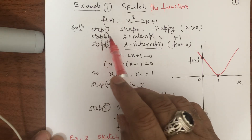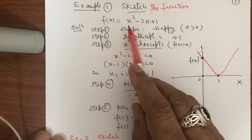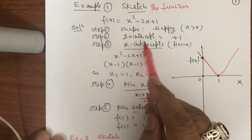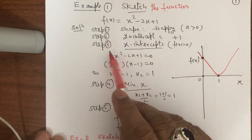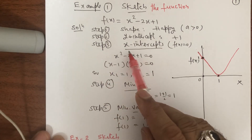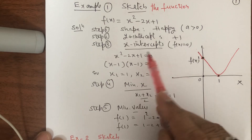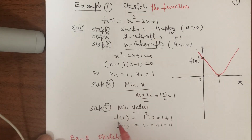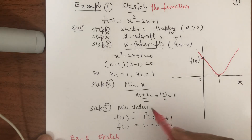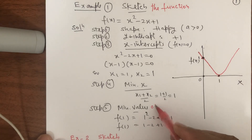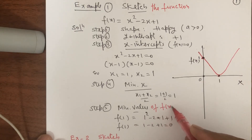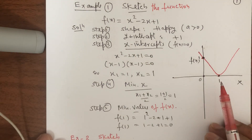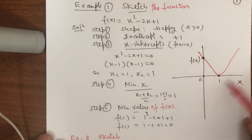Step 1: what will be the shape of the function? Step 2: what is the y-intercept of this function? Step 3: what are the x-intercepts, and what is the minimum value of x, and what is the minimum value of the function f(x)? These 5 steps we solve and then we draw the function.